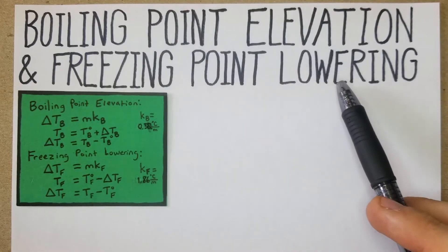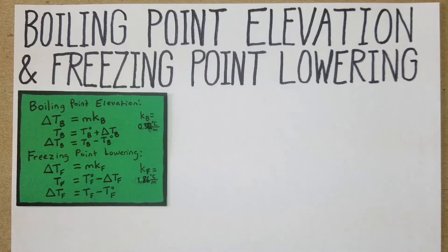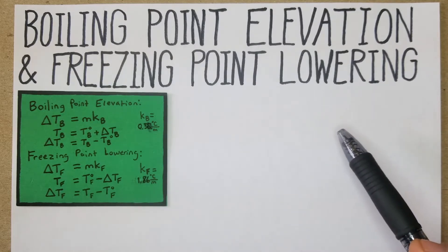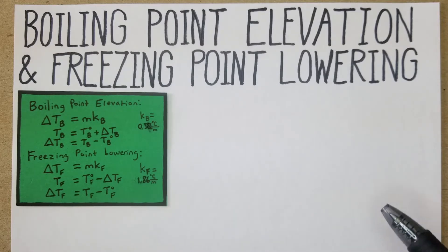On the other end of the spectrum, freezing point lowering: in the wintertime when they salt the roads, the salt helps dissolve the snow because the freezing point of water is lowered. Theoretically, it would have to be much colder outside for the snow to remain frozen or to start to freeze. So salting your road would not work in an environment that is way colder than what salt has the capacity to decrease the freezing point.